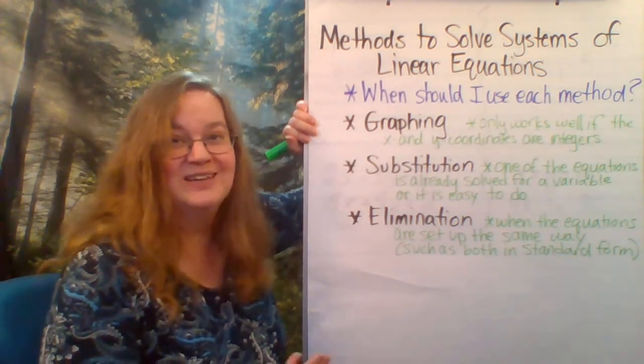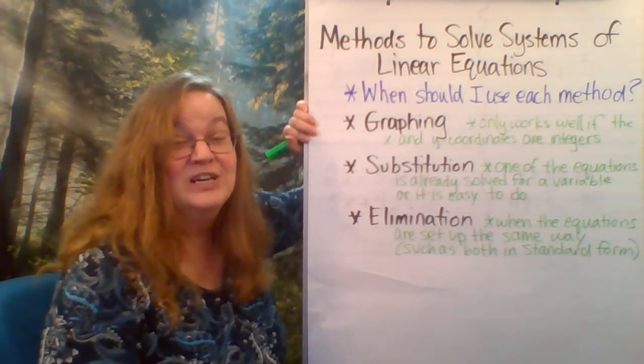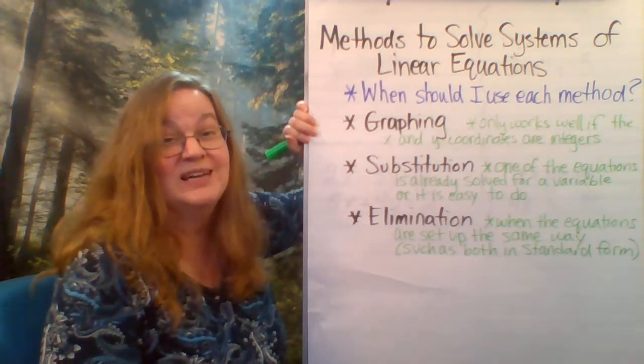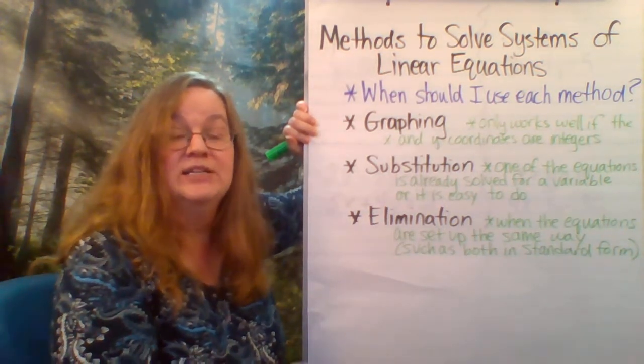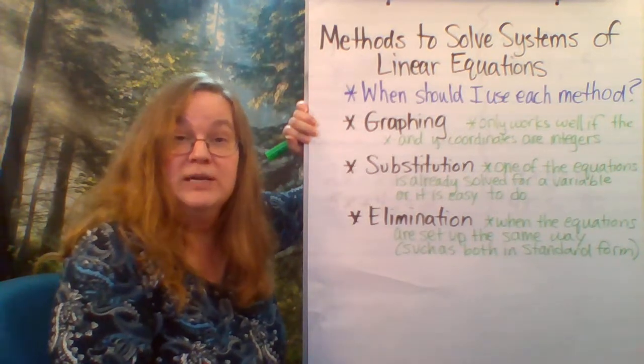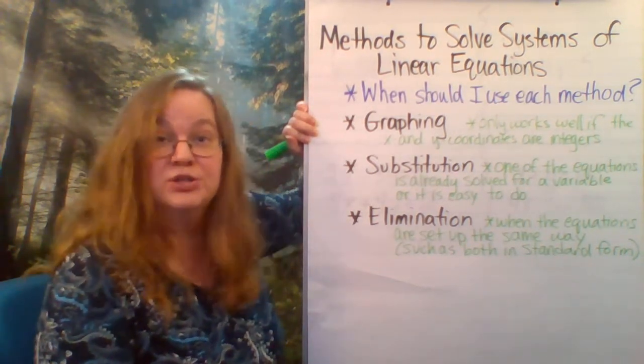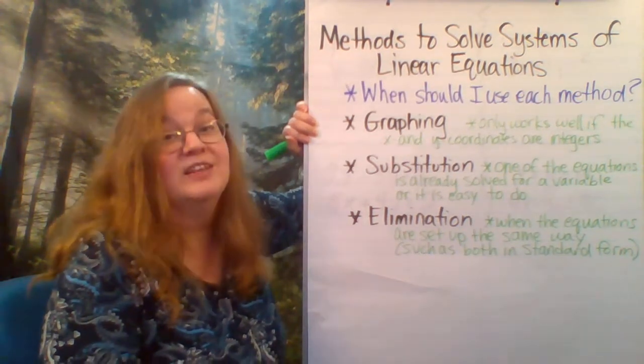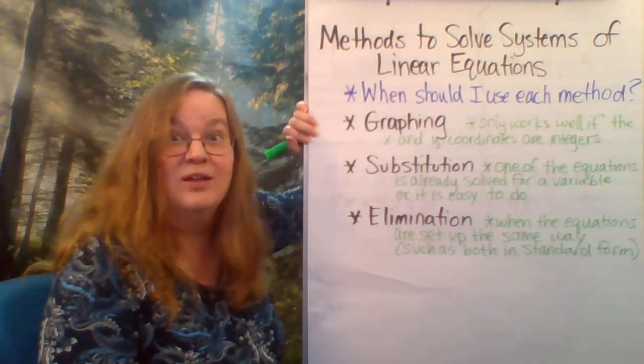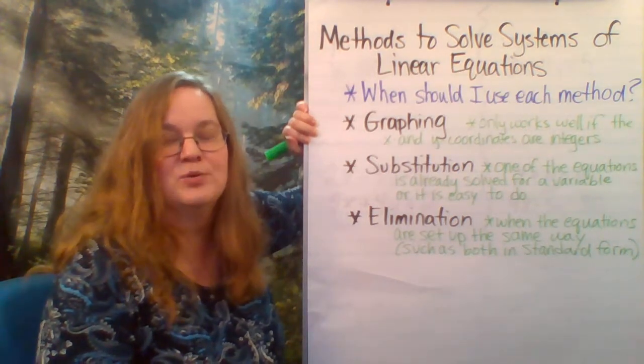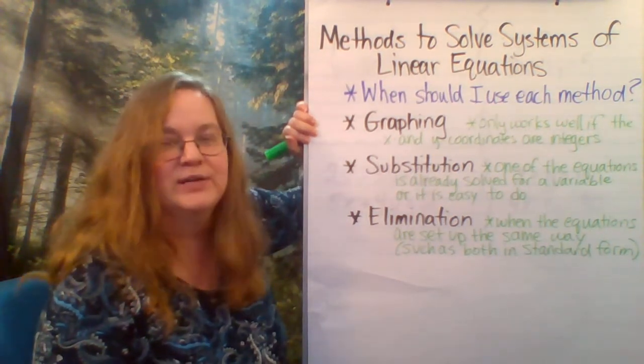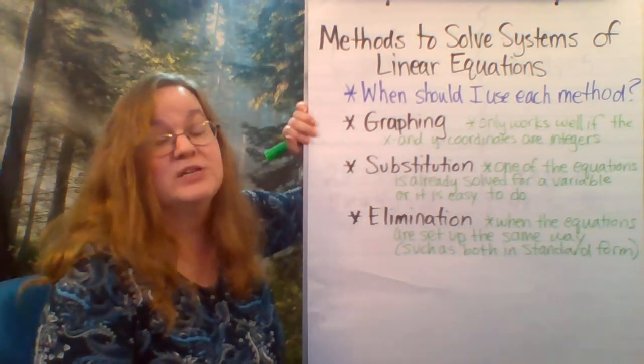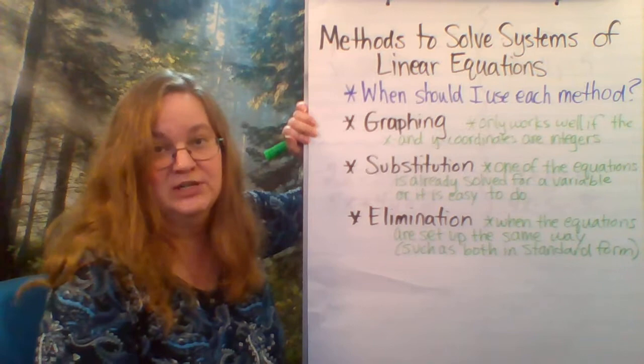But when you're actually solving, unless you're using a bit of technology, it's not always super useful because it has to come out to integer answers, the coordinates, something like 1 comma 2 in order for you to be able to read it. Because if it's fractional, then it's really hard to tell where two thirds is or 7.49 or whatever it is. So it's not as useful as the other two methods, but it is super important for your overall understanding of systems.